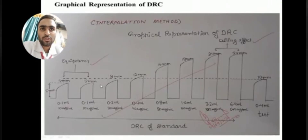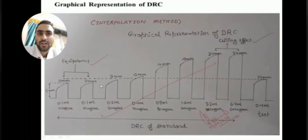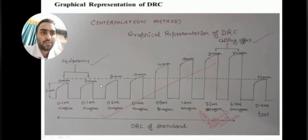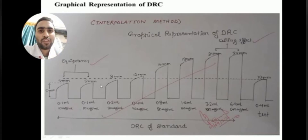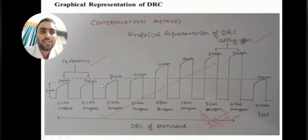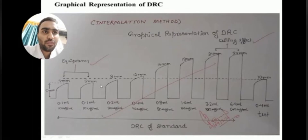Thank you Amul for explaining the procedure. Now I will present the graphical representation of the DRC using the interpolation method, also known as the graphical method. It is called the graphical method because there is no formula for directly obtaining the concentration of the unknown or test solution. We administered 0.1 ml of solution in the organ bath and got a height of around 5 mm, and repeated it to confirm equipotency — that the tissue is stabilized. We then administered doses from 0.2 to 1.6 ml, obtaining heights from 8 to 19 mm. At 3.2 ml we got 24 mm, and at 6.4 ml also 24 mm, indicating the maximal height — this is the ceiling effect.